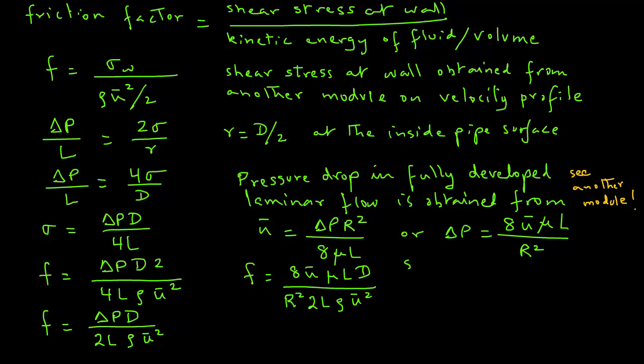And we know that R, which is radius, is diameter divided by 2, D over 2. So now we can go ahead and substitute for R squared in this expression and replace it with the diameter. So we have F equals 8 u bar mu L D times 4 divided by D squared 2L rho u bar squared.